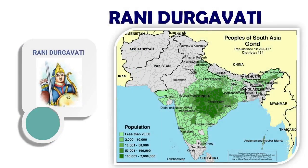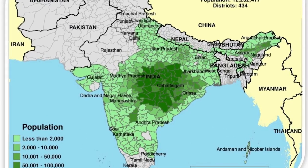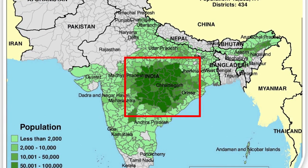Rani Durgavati: Gondwana can broadly be said to comprise the eastern part of Vidarbha, part of Madhya Pradesh to its north, the western part of today's Chhattisgarh, the northern part of Andhra Pradesh, and the western part of Odisha. Durgavati, born in the Chandel Rajput dynasty, became the queen of Gondwana. She was an excellent administrator. The struggle of Gondwana queen Durgavati against the Mughals is important in medieval history. After her husband's death, Durgavati laid down her life while fighting against Akbar, but she did not surrender.